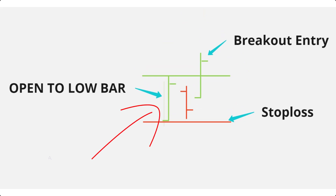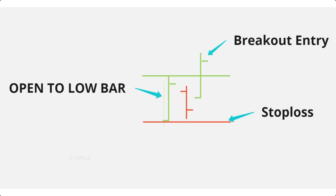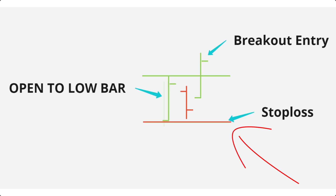This is the very first intraday bar of the day. The time frame could be anything from 1 minute, 3 minutes, 15 minutes, etc. The open value of this bar is equal to its low value. This bar is called the open-to-low bar. We mark the high and low values of this bar. If a bar breaks out above the high of this level, we take a long entry. The stop loss is below the low level. So this is the open-to-low bar long trade setup.